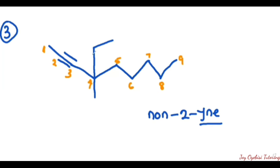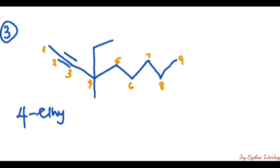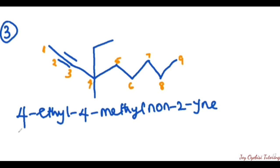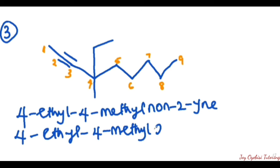The next thing is to look at the branches. On the fourth carbon, we have a methyl group on one side and an ethyl group on the other side. In alphabetical order, ethyl comes first. So the name of this compound is 4-ethyl-4-methylnon-2-yne.